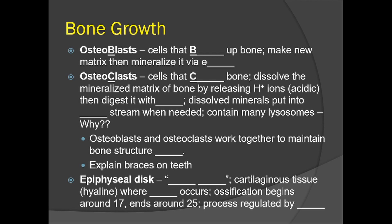Osteoclasts do the opposite of blasts — clasts are cells that consume bone. They dissolve the mineralized matrix of bone by releasing hydrogen ions, which create an acidic environment, then digest it with enzymes. The dissolved minerals are put into the bloodstream when needed. Whenever it's time for more calcium or phosphorus to come out of the bone and service some other tissue or organ, it's the osteoclasts breaking that down. This is continually happening within us.